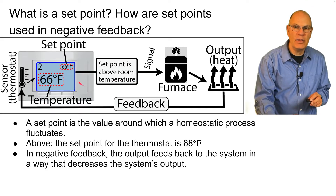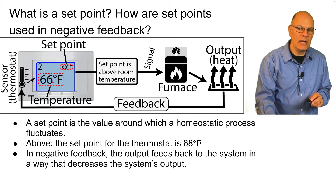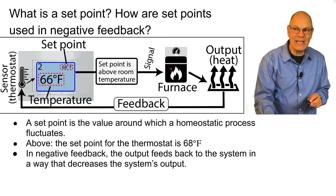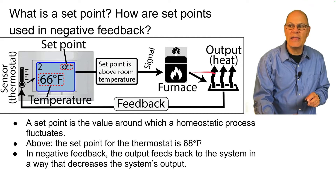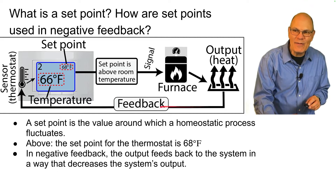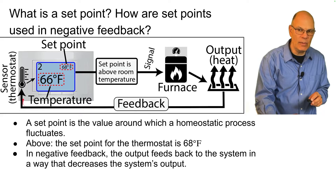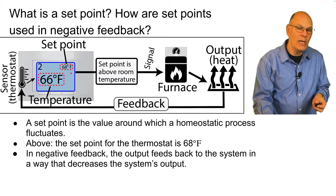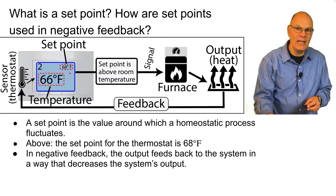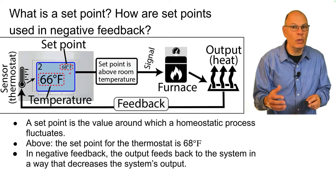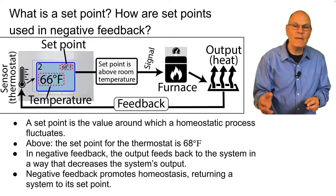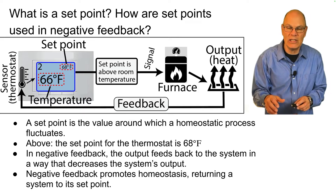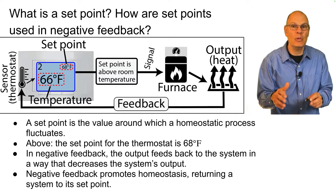Here we have the set point and a measurement of the temperature. When the set point is above the temperature, that sends a signal to turn on the furnace, which generates heat. Heat feeds back to the system via the thermostat's thermometer, increasing the temperature. When we reach 68 degrees Fahrenheit — the set point — the system turns off. Negative feedback promotes homeostasis by returning a system to its set point.